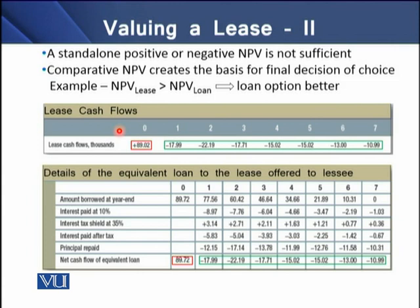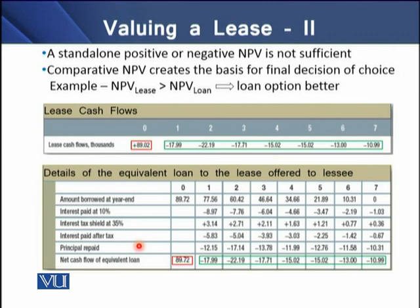On the screen, we have a lease cash flows chart displaying cash flows from year 0 to year 7. In the lower half, we have an equivalent loan to the lease that is offered to the lessee. The chart shows the amount borrowed, which is 89.72 as the initial cost of the asset, interest at 10%, and an interest tax shield of 35% offered to the borrower. We then have interest payment after tax and repayment of principal — in other words, a loan amortization schedule — along with annual cash flows under this borrowing contract for the full seven years.